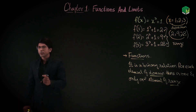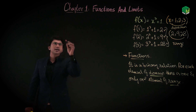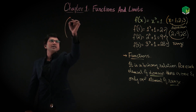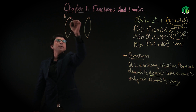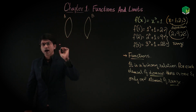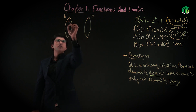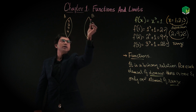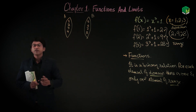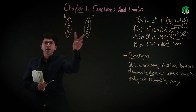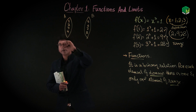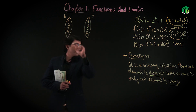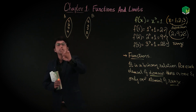Let's say you have set A and set B. In every set you have elements. For example, set A has elements 1, 2, 3, 4 and set B has elements 5, 6, 7, 8. A function is a binary relation: for each element of domain (set A), there exists one and only one element of range (set B).